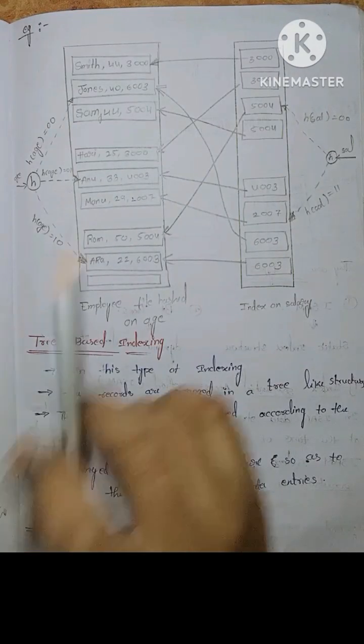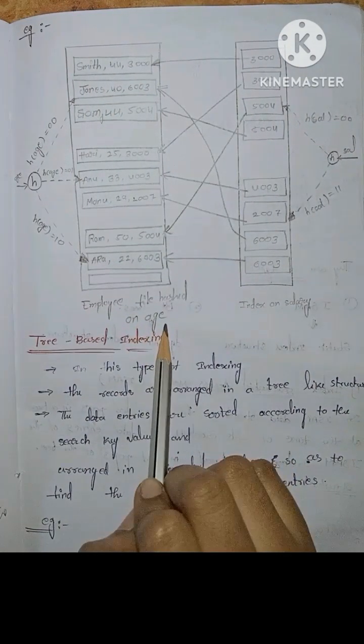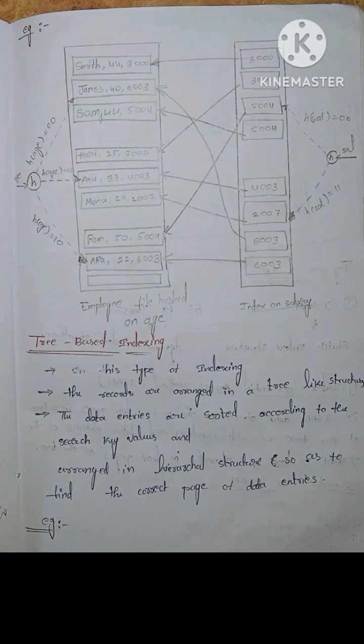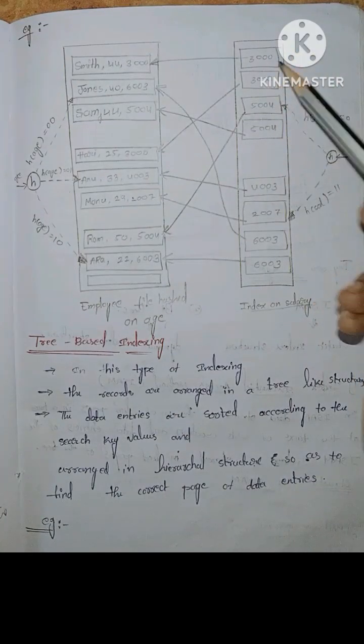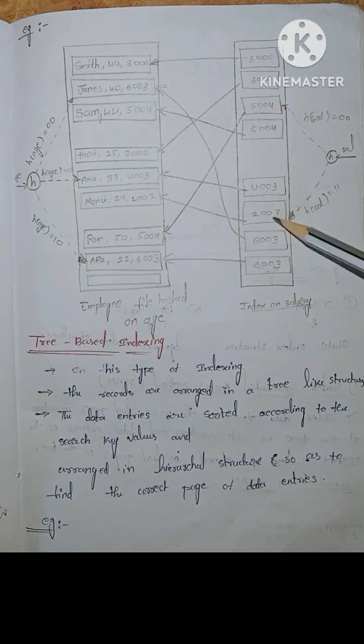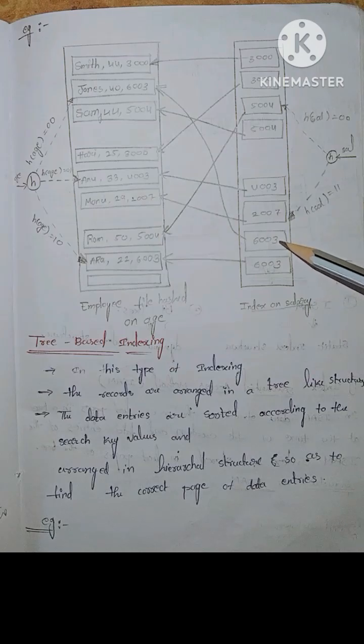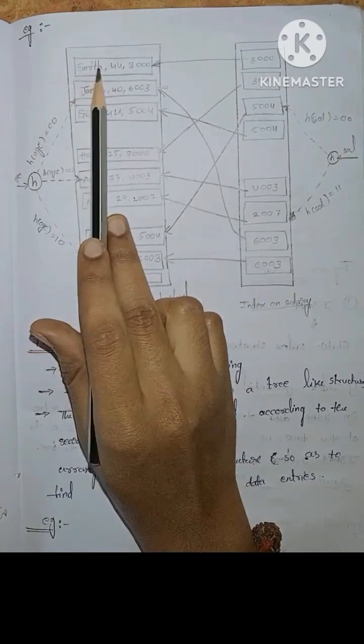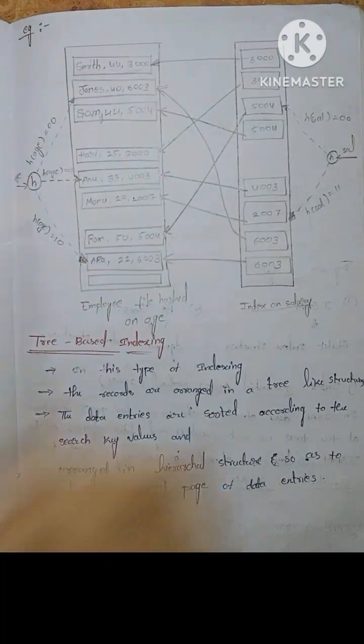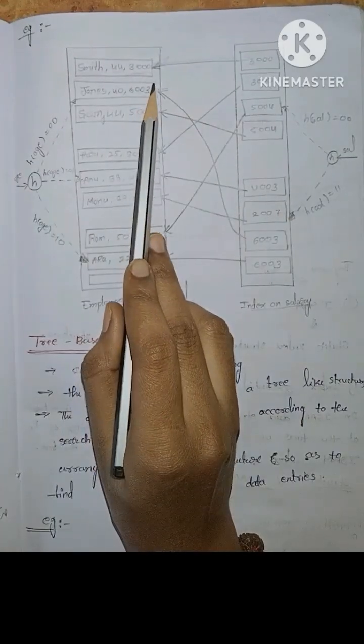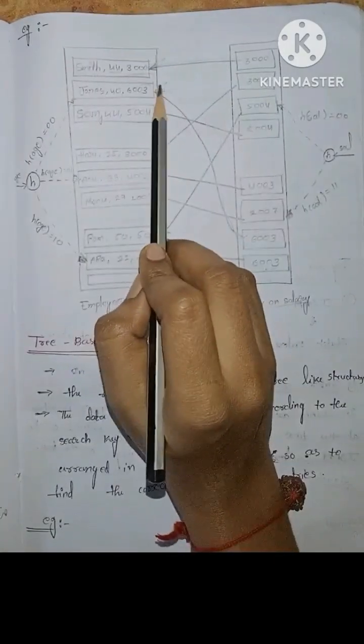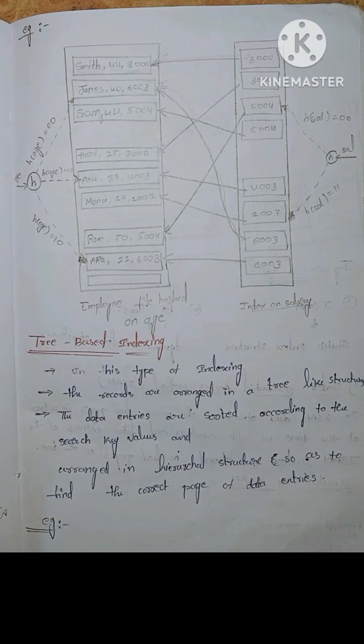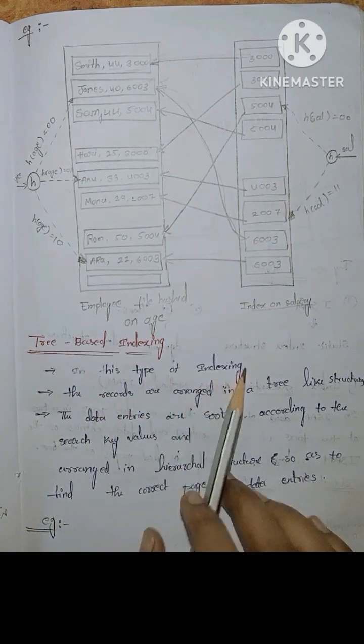Example for hash-based indexing. In this case, apply file hashing with age, apply age, index and salary. Salaries, apply name and age and salary. In this case, we will see the first salary. Here is 3000, 3000, 50004, 50004, 40003, 20007, 60003 and 60003. We will increase the name. Example: hash table, hash-based indexing example, indexing in this type of indexing.